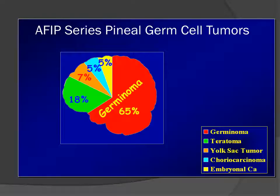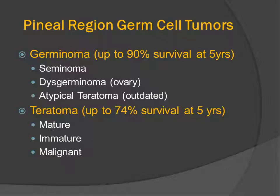Looking at the AFIP series of pineal region germ cell tumors, two-thirds have the single histology of the germinoma — also called seminoma, atypical teratoma, or dysgerminoma; all four are acceptable synonyms. The germinoma is the most common tumor type, and despite arising from primordial precursor cells, the five-year survival is up to 90%. The teratoma, which may be mature, immature, or malignant, has a five-year survival of almost 74%.